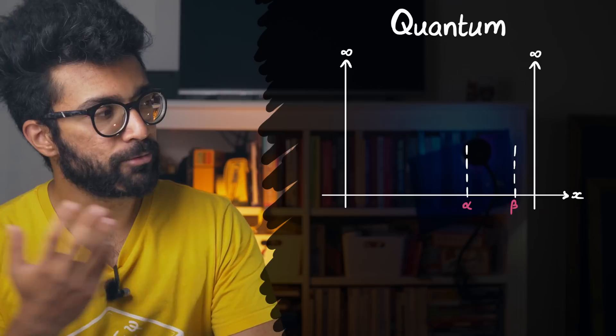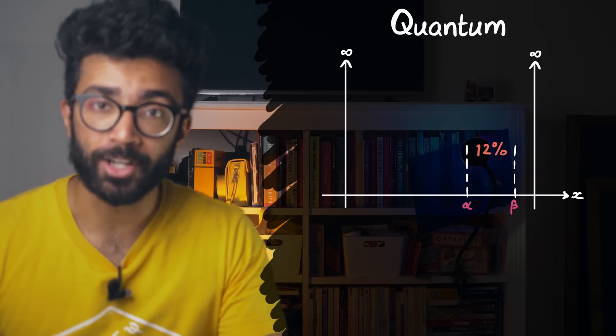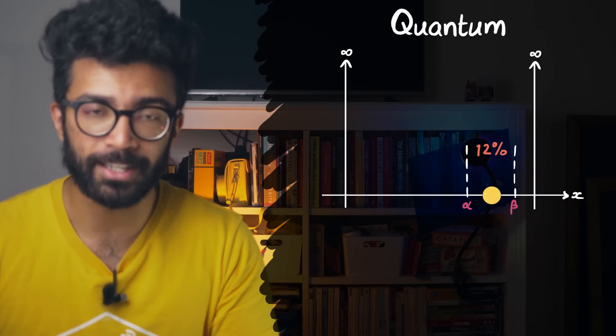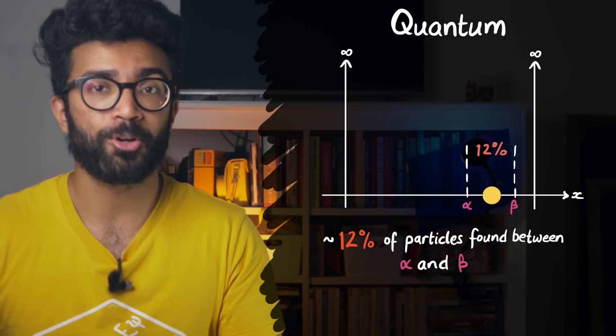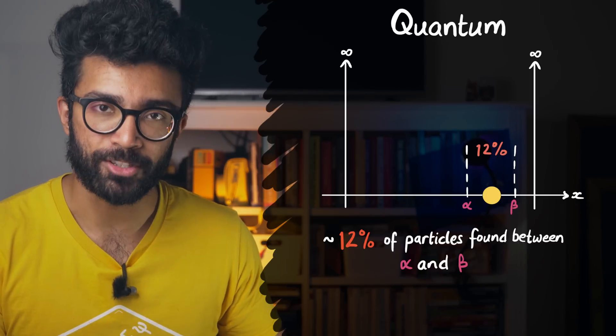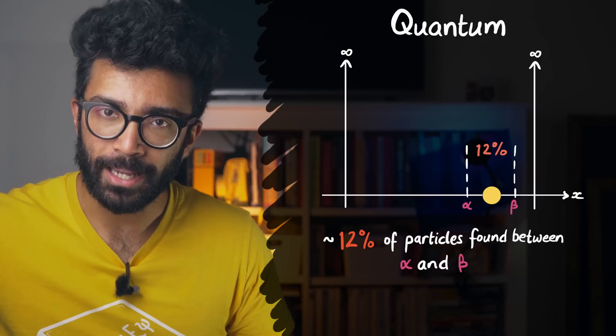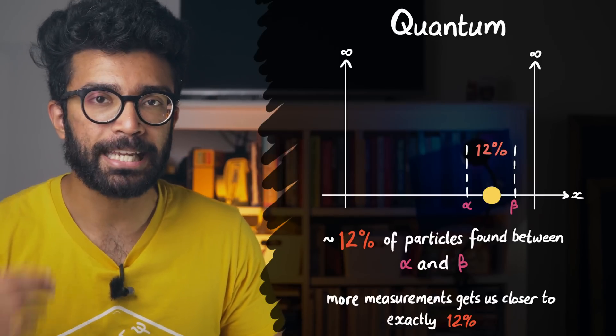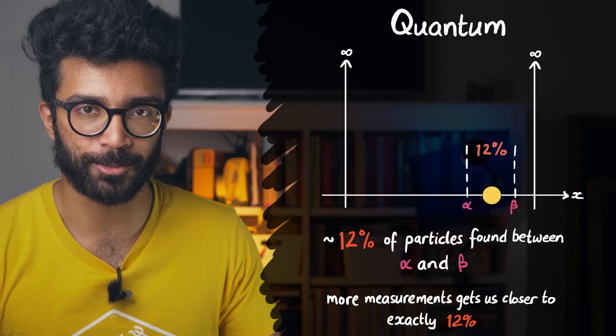Specifically, if this region had a 12% chance of our particle being found there, then roughly 12% of all of the particles found at all would be in this region. And the more measurements we made, the closer we'd be to finding exactly 12% of particles in this region.